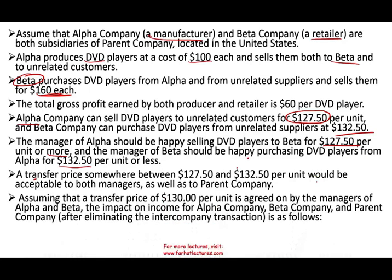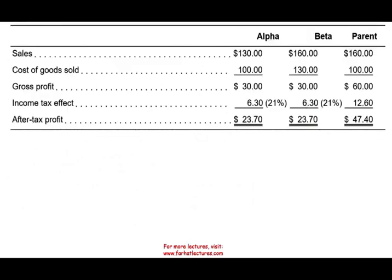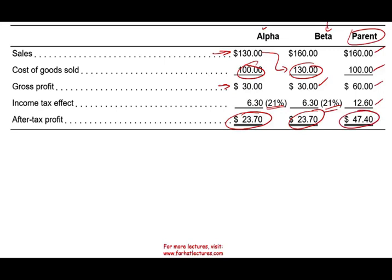Assuming a transfer price of $130, Alpha's income statement shows: cost $100, selling price $130, profit $30, US tax $6.30, after-tax profit $23.70. Beta buys at $130, sells at $160, profit $30, tax $6.30, after-tax profit $23.70. Combined: total sales $160, total cost of goods sold $100, total profit $60, total tax $12.60, net profit $47.40. The deal is fair.